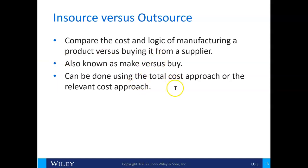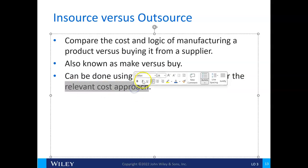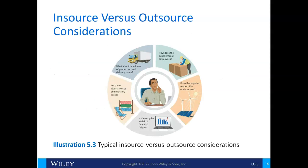This can be done using the total cost approach or the relevant cost approach, but we'll use the relevant cost approach. Some qualitative things to worry about: timeliness — if someone else does it, will they get it to you on time? Can you use that factory space for something else? Is the supplier financially stable? Does the supplier respect the environment and treat employees ethically?